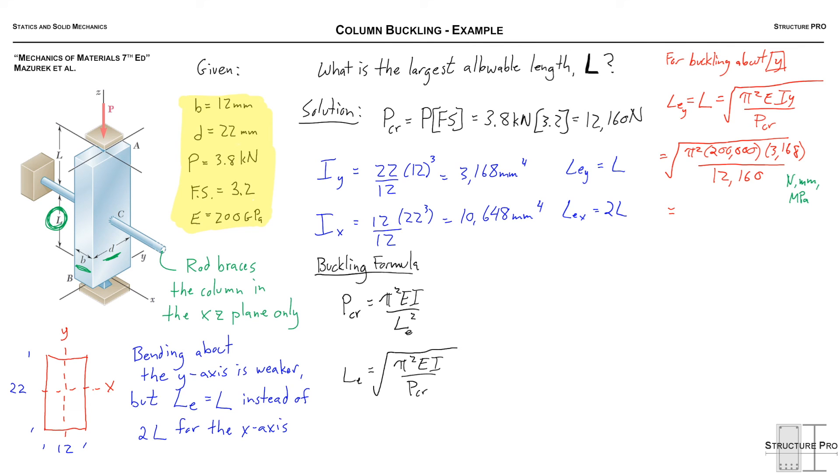So these are consistent units and they're going to give us an L in millimeters. So after grabbing our calculators and plugging everything in we realize we have an allowable length of 717 millimeters so less than a meter and remember that's really only half of this column ABC.